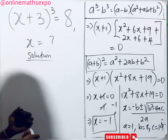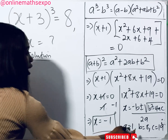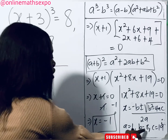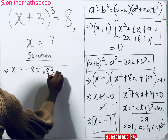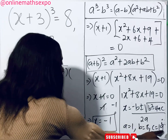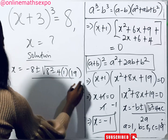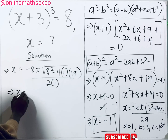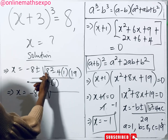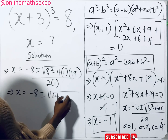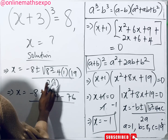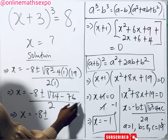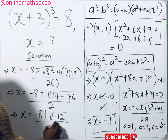Plugging into the formula: x = (−8 ± √(8² − 4 × 1 × 19)) / (2 × 1). Simplifying inside the square root: 8² = 64, and 4 × 1 × 19 = 76. So we have x = (−8 ± √(64 − 76)) / 2, which gives x = (−8 ± √(−12)) / 2.